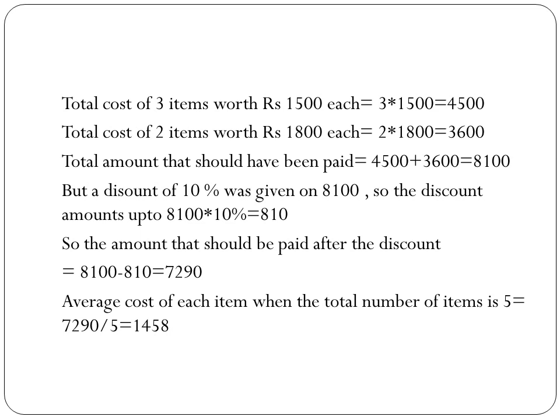He buys 3 items of Rs. 1500 each: 3 × 1500 = Rs. 4500 in total. Next, 2 items of Rs. 1800 each: 2 × 1800 = Rs. 3600. So the total amount he should have paid is Rs. 4500 + Rs. 3600 = Rs. 8100.